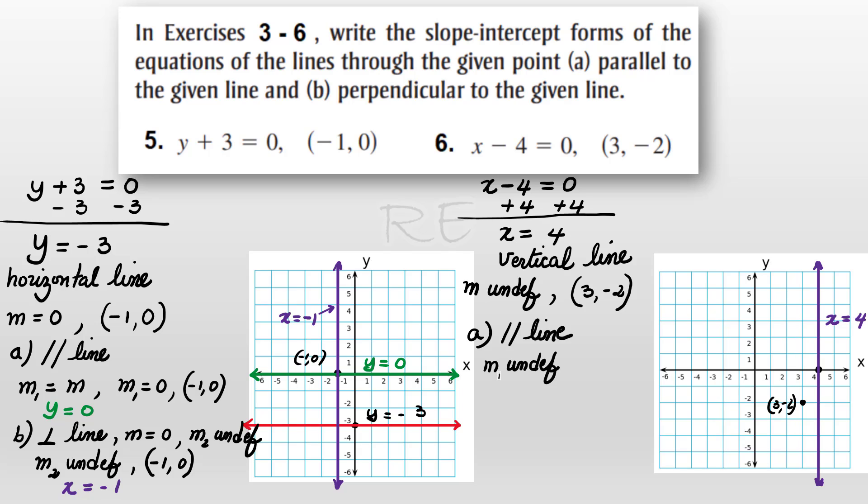And since it must go through the point 3, negative 2, its equation will be x equals 3. The vertical line x equals 3.